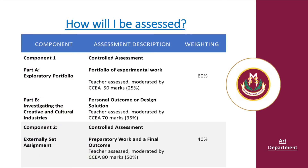Component 1, completed in Year 11, is worth 60%, and Component 2, completed in Year 12, is worth 40%.